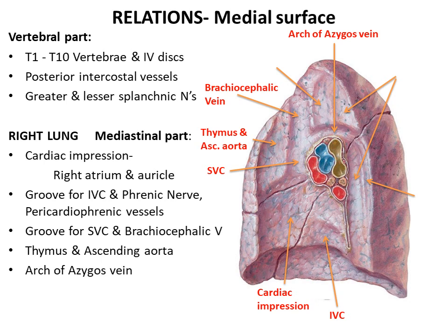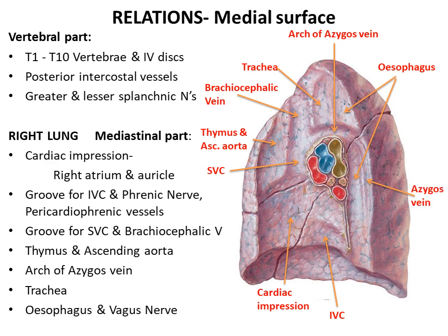Just above the azygos vein is the impression for the trachea anteriorly and the esophagus posteriorly. The esophagus then descends posterior to the hilum and the pulmonary ligament, accompanied by the vagus nerve which descends posterior to the hilum. Just behind it we may see a small impression of the azygos vein.